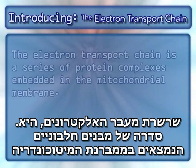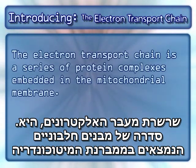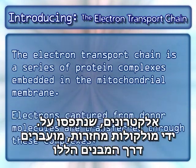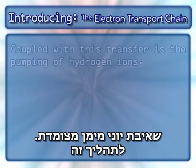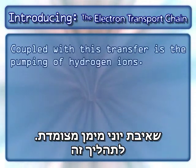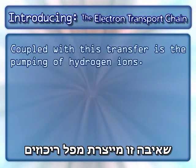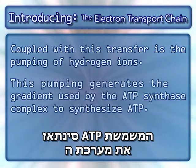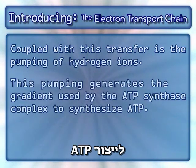The electron transport chain is a series of protein complexes embedded in the mitochondrial membrane. Electrons captured from donor molecules are transferred through these complexes. Coupled with this transfer is the pumping of hydrogen ions, which generates the gradient used by the ATP synthase complex to synthesize ATP.